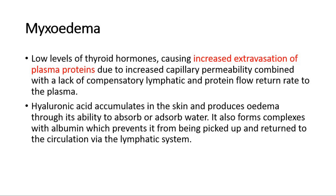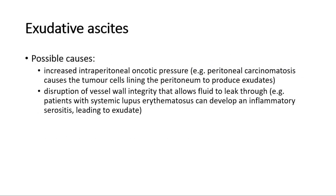That's it for the causes of ascites in the peripheral arterial vasodilatation theory. Another type of ascites is the exudative type, which is caused by peritoneal cancer, infections like TB, or inflammatory diseases like SLE. There are two possible mechanisms: it could be due to increased intraperitoneal oncotic pressure, such as in peritoneal carcinomatosis, which causes tumor cells lining the peritoneum to produce exudates; or disruption of vessel wall integrity that allows fluid to leak through. Patients with SLE can develop an inflammatory serositis, leading to exudate.